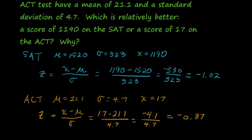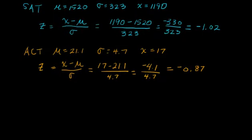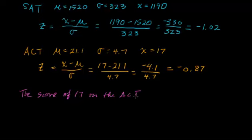So what did we find? We found that the ACT score is not quite one standard deviation below the mean—it's 0.87, not quite one standard deviation below the mean. So what's our conclusion? On which test did this student score relatively better? Relative to the other students—the mean and the standard deviation tell us about the other students—on which test did this student score better? The score of 17 on the ACT is relatively better.